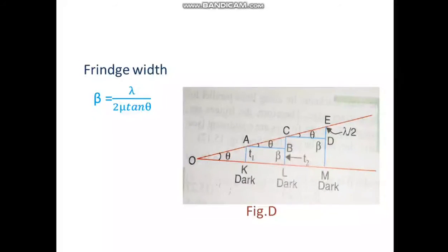We may write this equation beta equals to lambda upon 2 mu T cos of theta. For small values of theta, tan theta will be equal to theta and therefore beta equals to lambda by 2 mu theta.